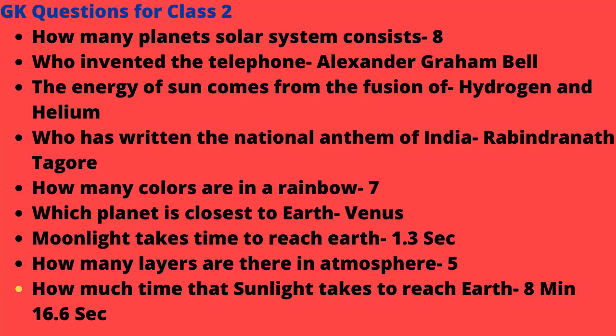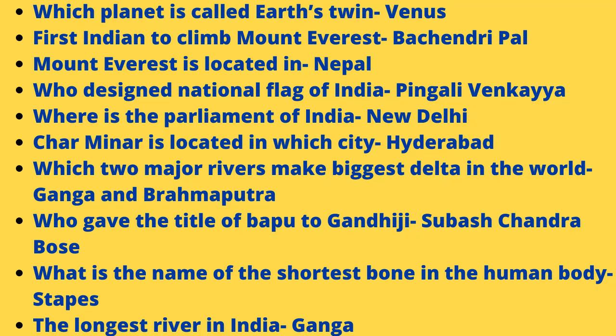How many layers are there in the atmosphere? 5. How much time does sunlight take to reach Earth? 8 minutes 16.6 seconds. Which planet is called Earth's twin? Venus.